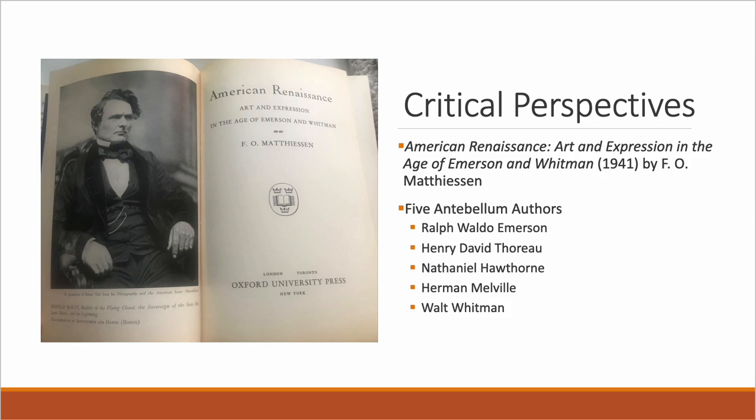When F.O. Matthiessen writes his book 'The American Renaissance: Art and Expression in the Age of Emerson and Whitman' back in 1941, he's really comparing a new flourishing of American writers to that earlier period centuries before, which was seen as the epitome of art. In making the comparison, he's making the argument for something great happening in America.